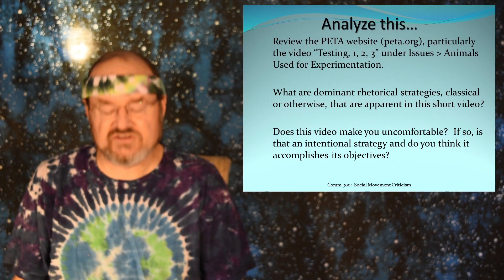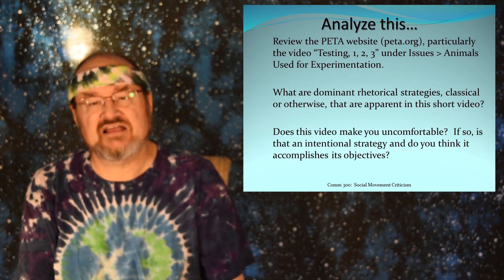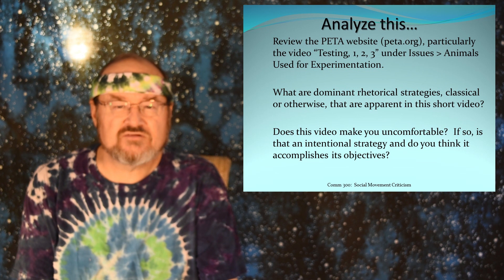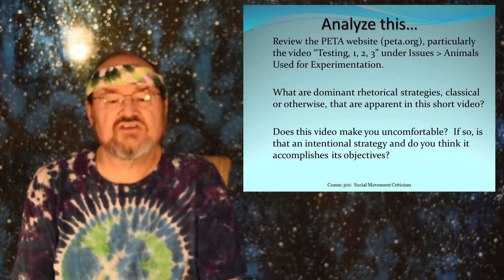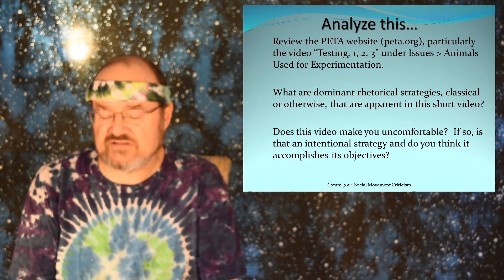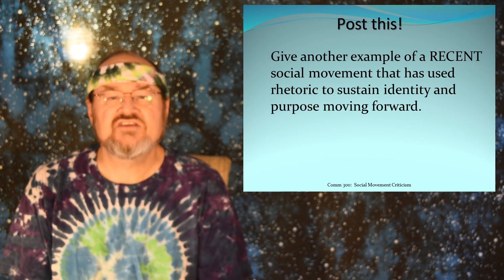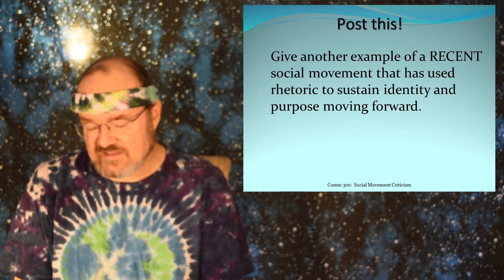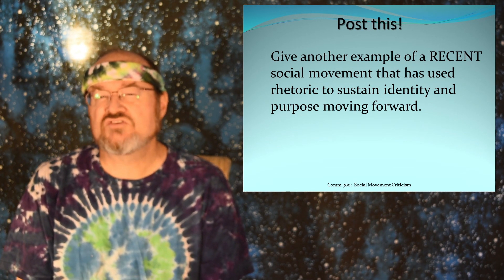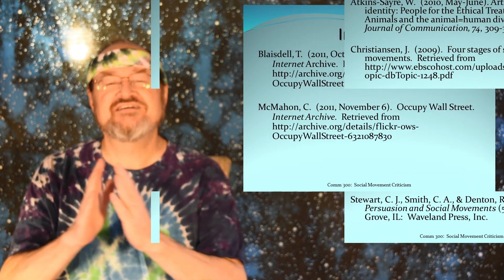I want you to review the PETA website and particularly the video 'Testing 1, 2, 3,' and identify what you think the dominant rhetorical strategies are — classical or otherwise — that are apparent in this short video. Identification, logical argument, emotional appeal, ethos, stylistic language usage, how the video is presented — talk about that and then post this. Also give another example of a recent social movement that's used rhetoric and sustained its identity and purpose moving forward. Talk about the social movement and how it uses rhetoric to advance its aims. That's all for now. Have a great day and blessed be.